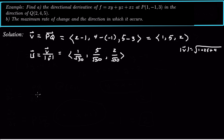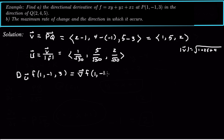Now for part a, we want to find the directional derivative D_u of f at (1, -1, 3). By definition, it's going to be the gradient of the function evaluated at the point, dotted with the unit vector. So now we need the gradient of our function.